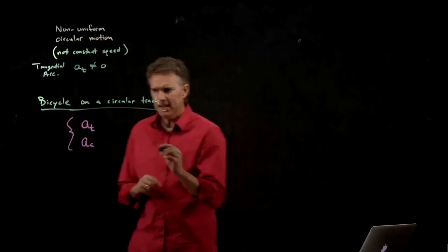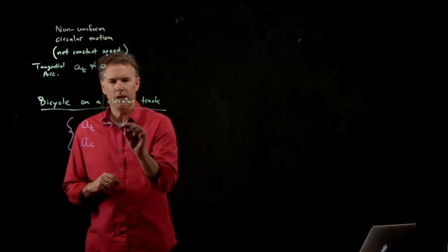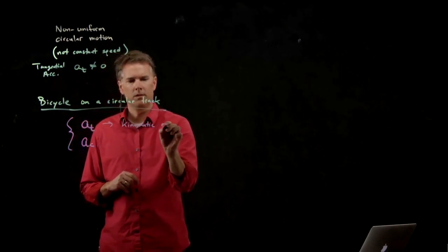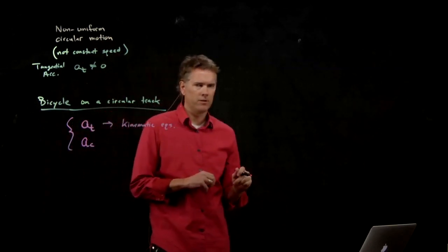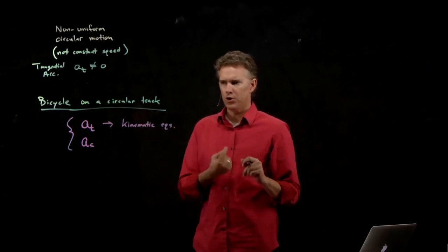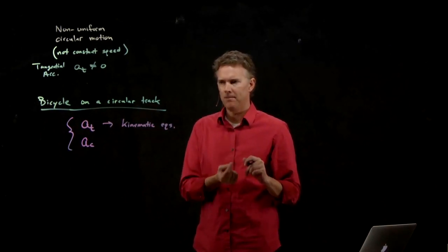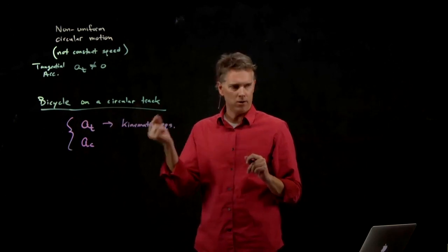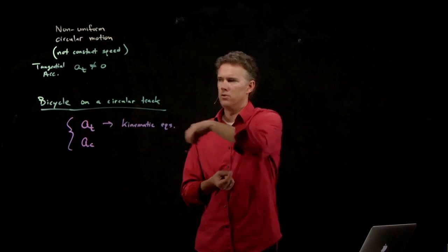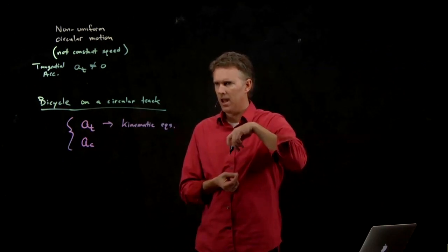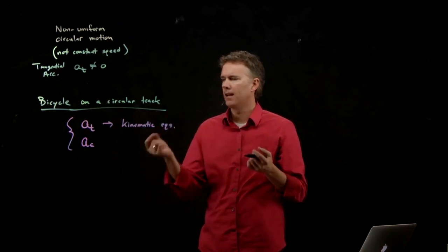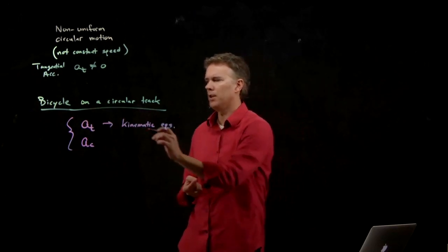a_t you can get from the kinematic equations. So for instance, if they start from rest and they go once around the track in some amount of time, you can calculate their acceleration because you know that they went 2πr in distance, and they did that in some amount of time t. And so you can calculate exactly what the acceleration is.